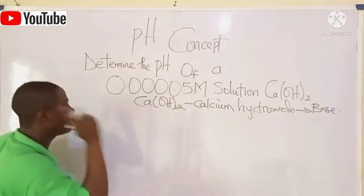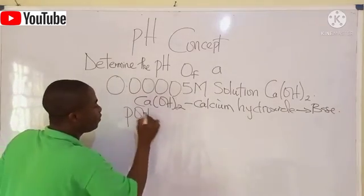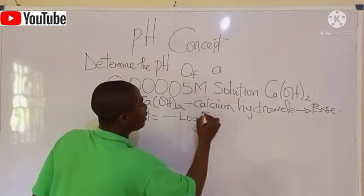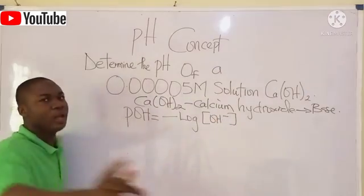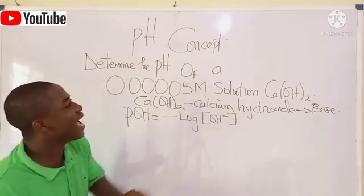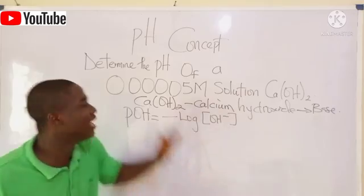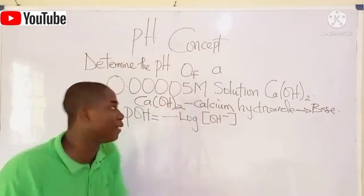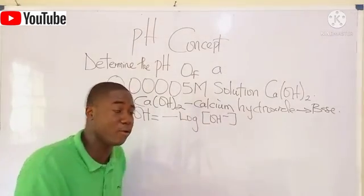Now, first thing first. Recall the formula for solving pOH, which is pOH equals negative logarithm into the base 10 of hydroxide ion concentration. Now, if we check carefully, the hydroxide ion concentration in this question is not given. They gave us the full concentration of the compound, which is this. So, we use another alternative formula.